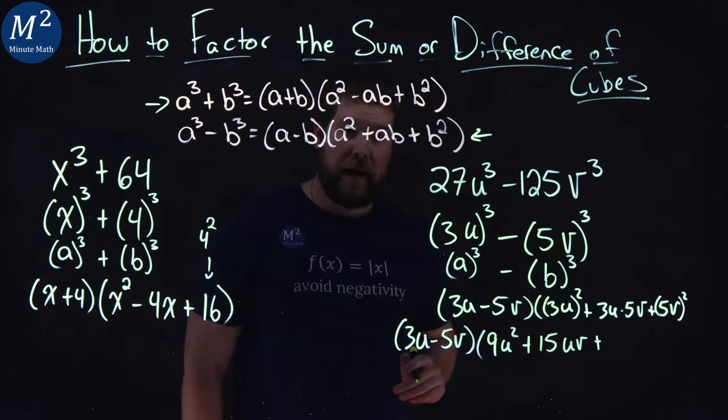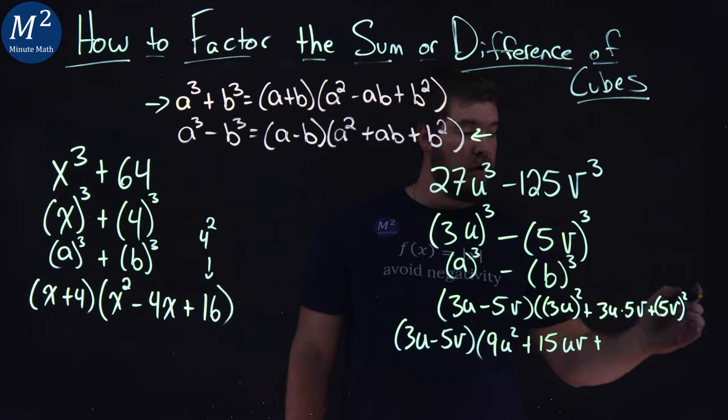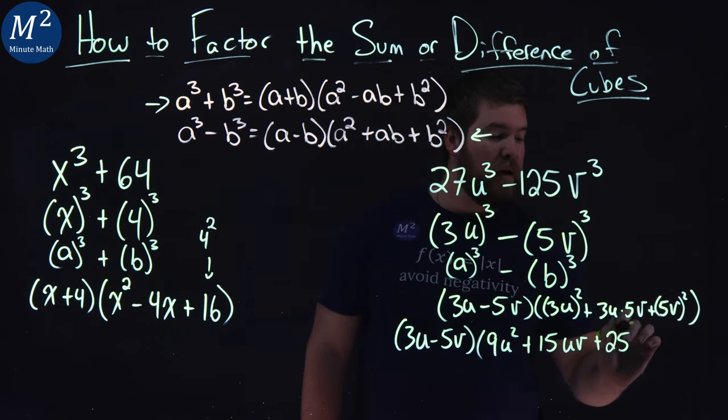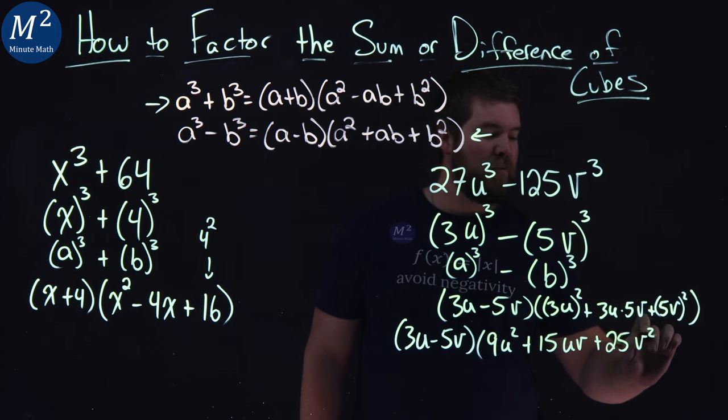Plus lastly 5v all squared. 5 squared is a 25. And a v squared is a v squared.